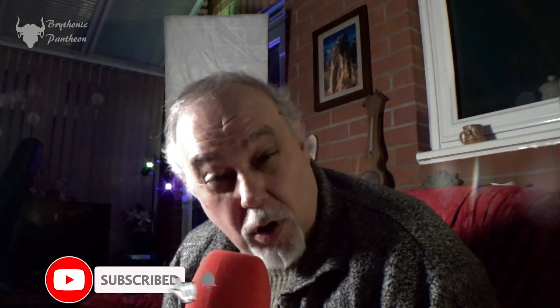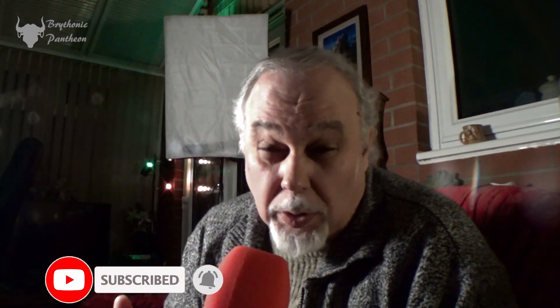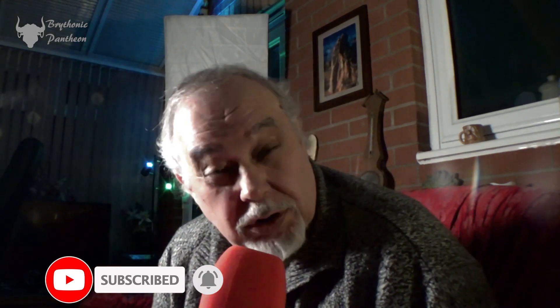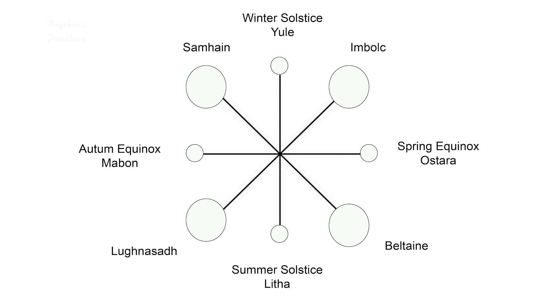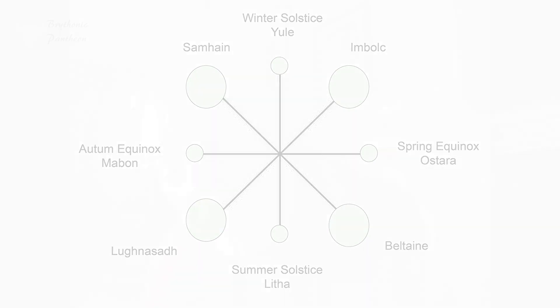They found out that the best time for planting crops was somewhere between the winter solstice and the spring equinox, and this marked the first season that we now call spring. The Neolithic people were the first peoples to associate the movement of the sun with the various seasons of the year.